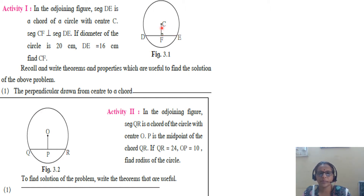Recall the property: perpendicular from center to the chord bisects the chord. So, if DE is 16, how much is DF? It is 8. How much is FE? This is also 8.